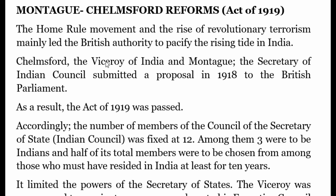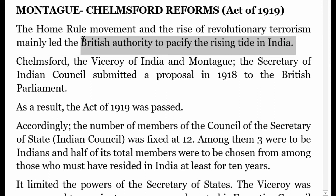The home rule movement and the rise of revolutionary terrorism mainly led the British authority to pacify the rising tide in India. This was the time when Indians were revolting against the British, and the British had to do something good in favour of India so that the nerves of the people could be controlled.